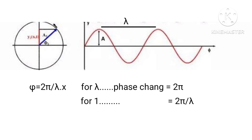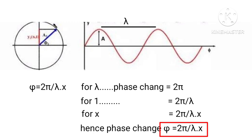For one unit, it equals 2π/λ. For distance x, it equals 2π/λ·x. Hence, phase change φ = 2π/λ·x.